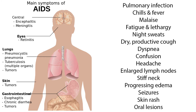Pulmonary infection is usually the first symptom of AIDS and is a constant threat. Other signs and symptoms include chills and fever, malaise, fatigue and lethargy, night sweats, dry productive cough, dyspnea, confusion, headache, enlarged lymph nodes, stiff neck, progressing edema, seizures, skin rash, and oral lesions.